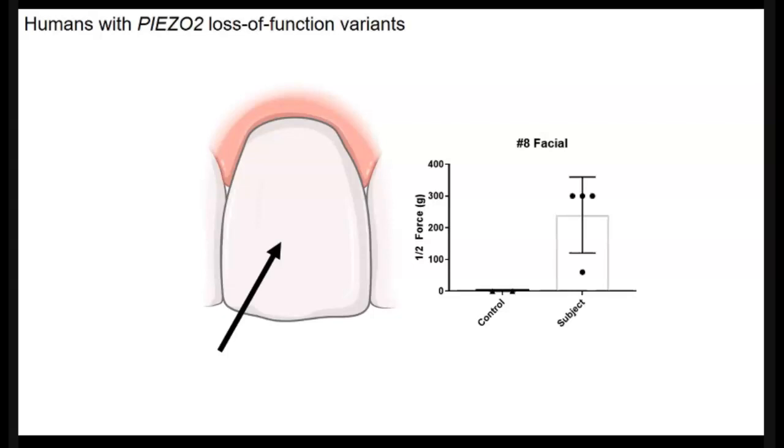But subjects without functional piezo-2 probably wouldn't detect a wooden dowel if it were rammed into their teeth. So 300 grams represents the largest von Frey filament that we use for this particular test. And most subjects actually reported hearing it, but not actually being able to feel it. So clearly the structure of the tooth and the surrounding tissues is capable of sensing light touch, and that depends on functioning piezo-2.